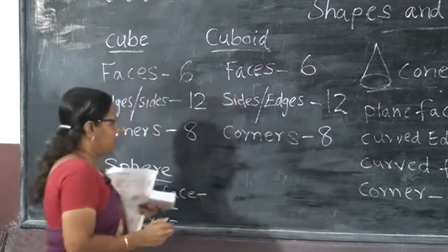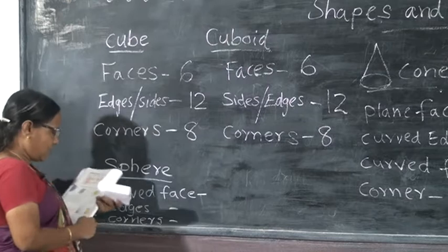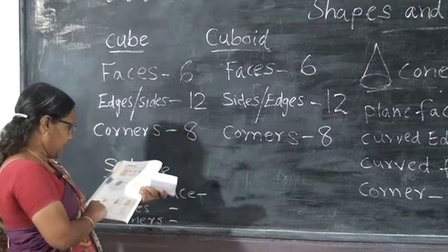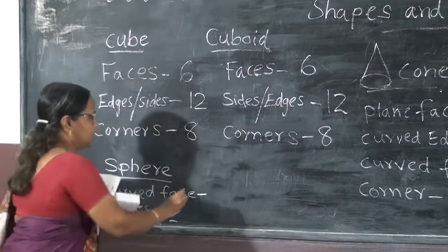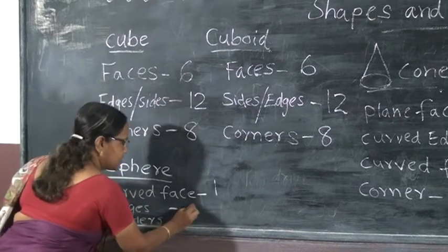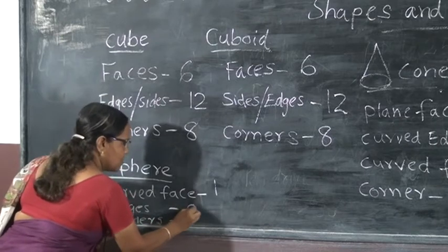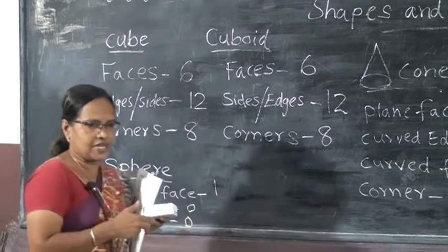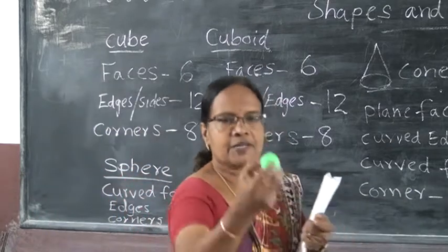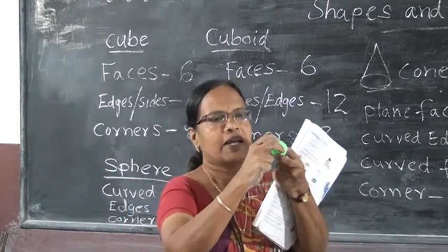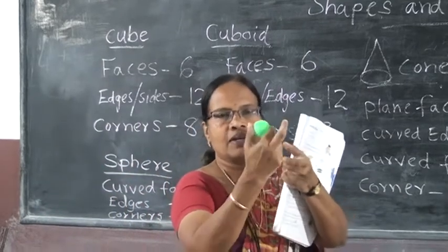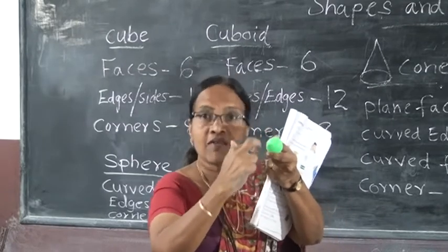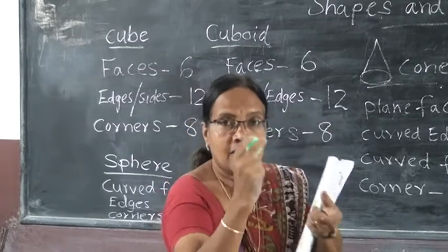Then next is sphere. Sphere has a curved face — one curved face. Edges: zero. And corners: zero.